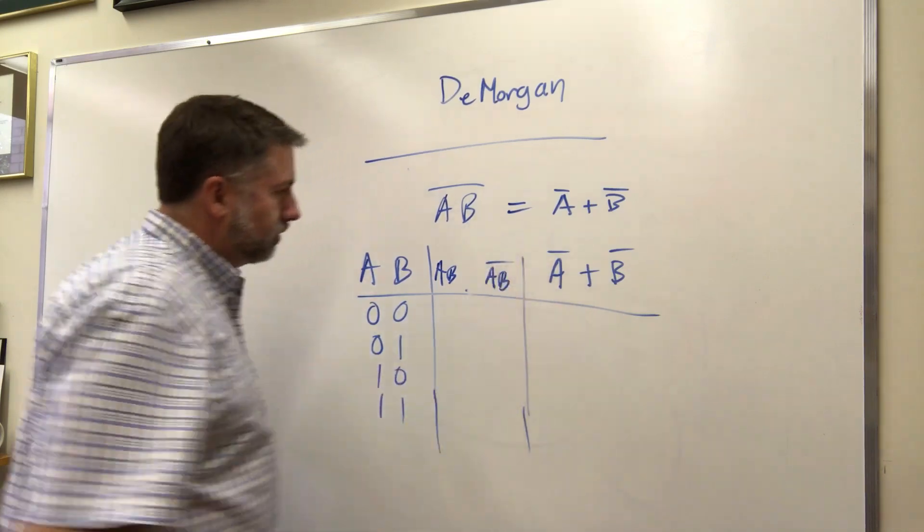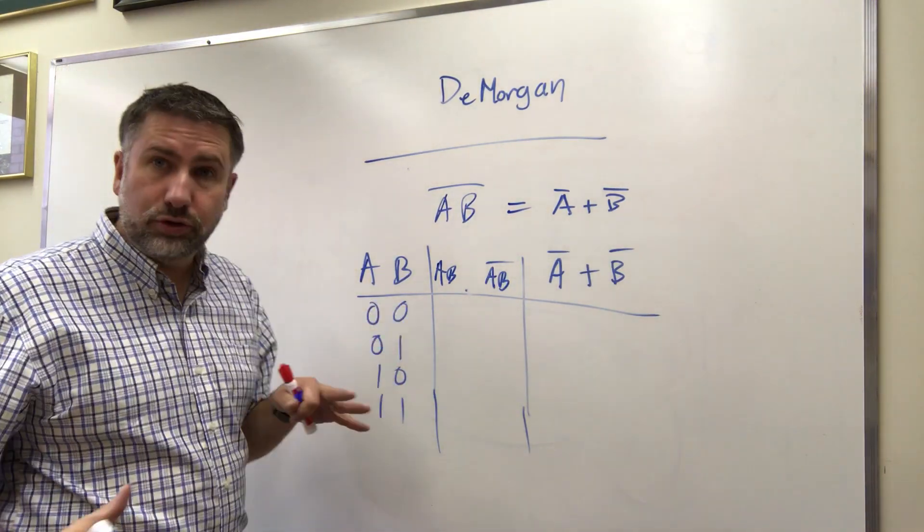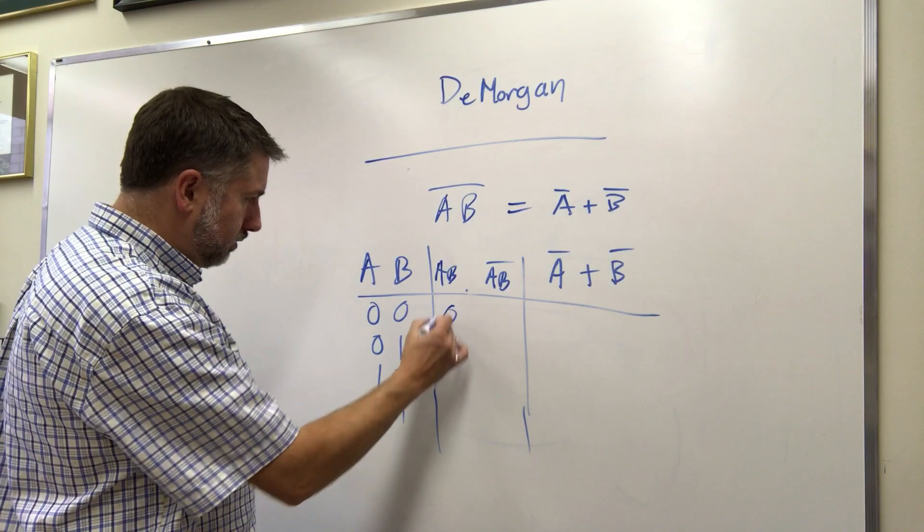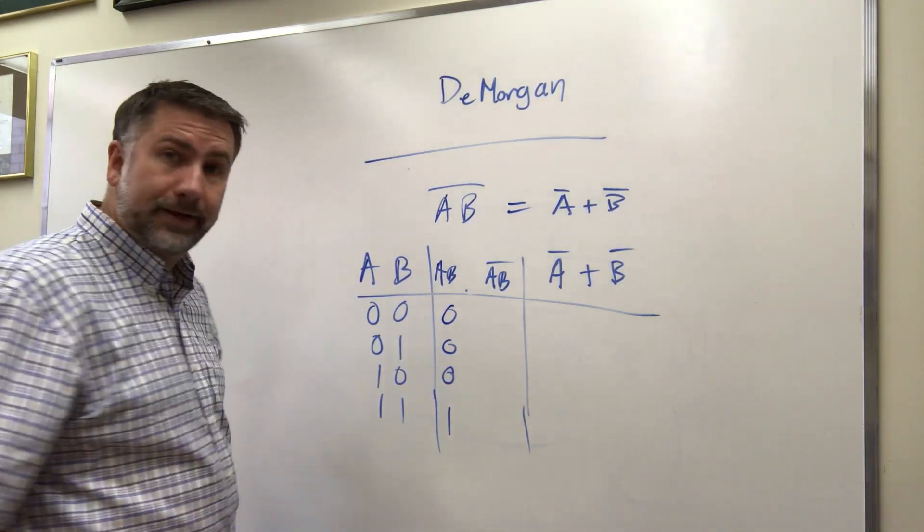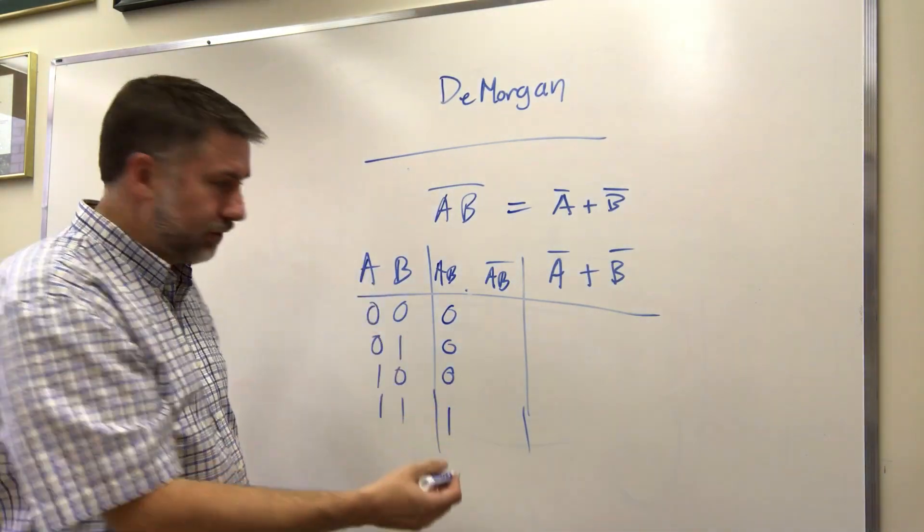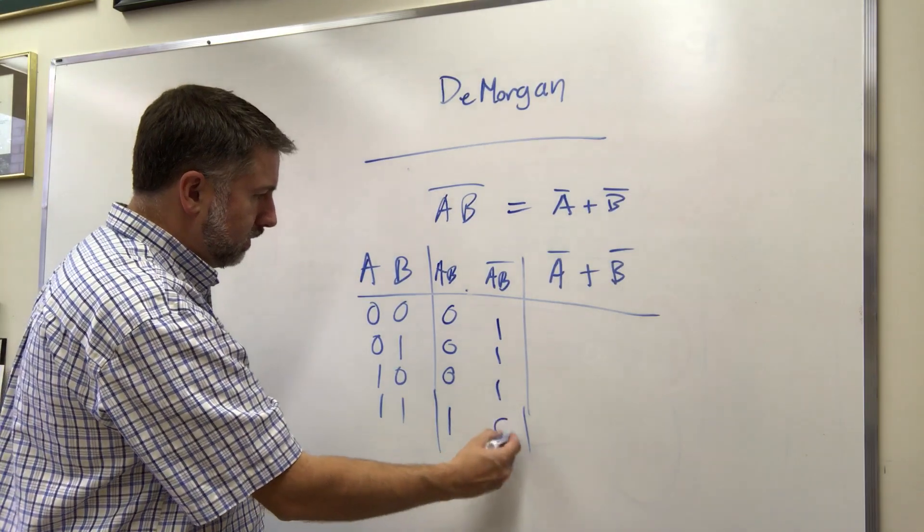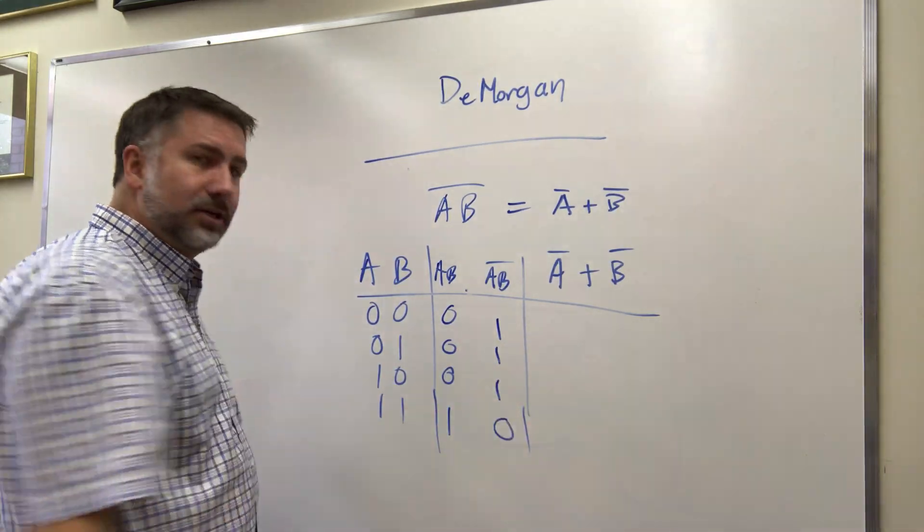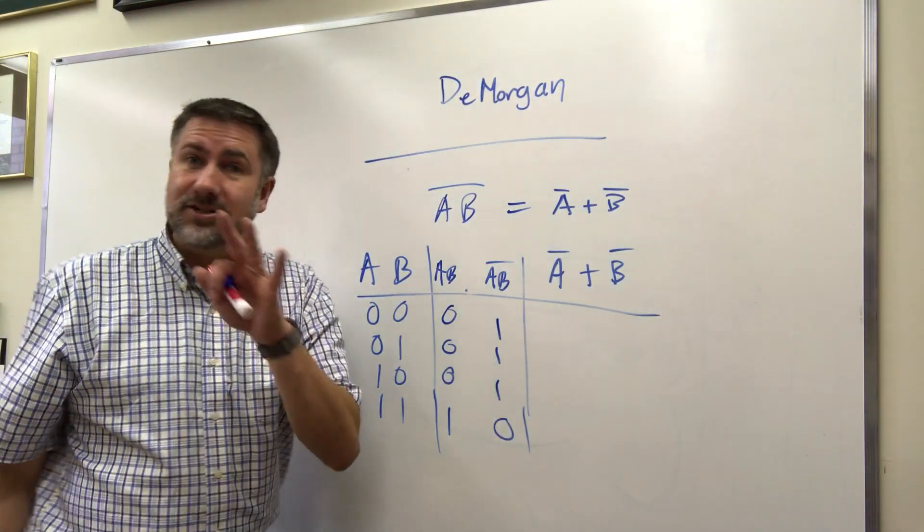And then here this is AND inverted. So we can do this in two steps if you want. We can do AND and then invert it. So AND is true only if both inputs are true like that, and then we invert it.